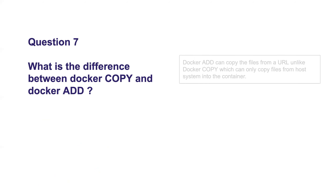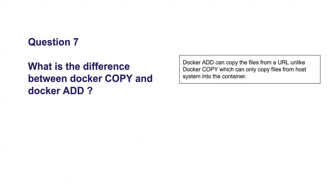Question seven: what is the difference between docker COPY and docker ADD? Both are used to copy files inside a Docker image, but docker ADD also has the capability of pulling files from a URL. For example, if a file is stored on GitHub, you can use ADD with the URL and it will download the file directly into the Docker image. COPY can only copy files from your host to the Docker image.